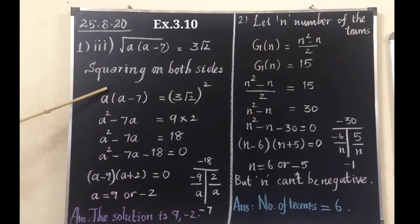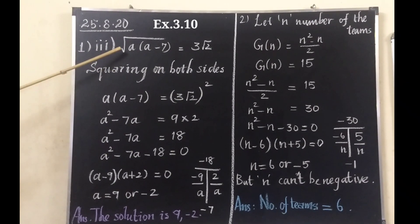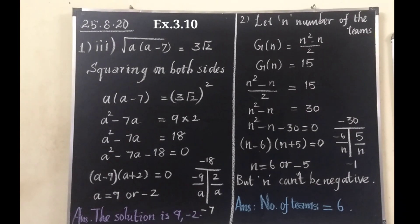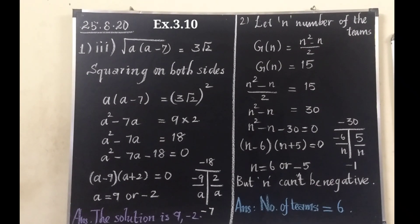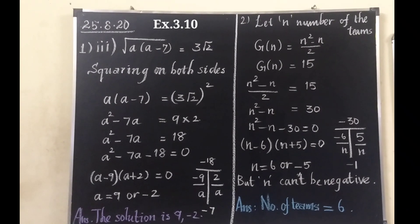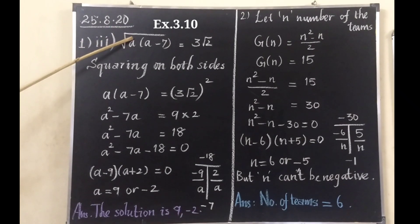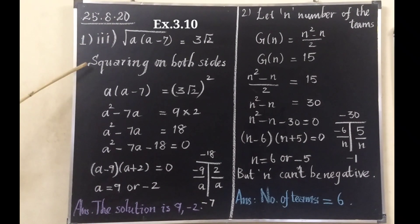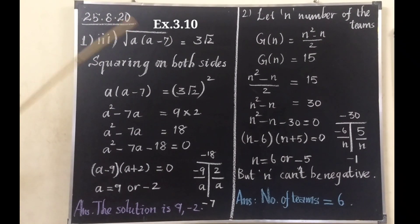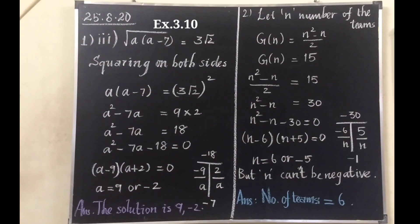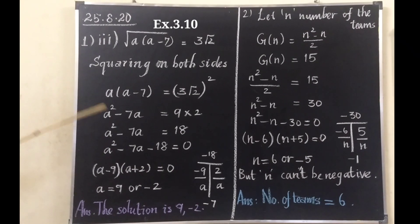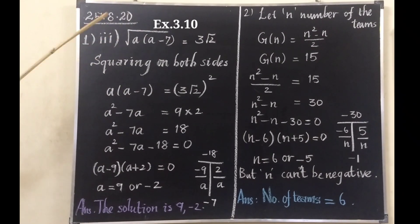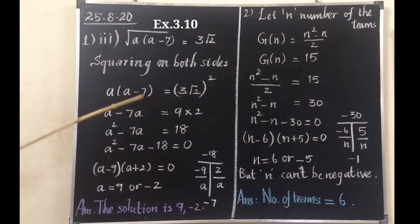Why are we squaring on both sides? To remove the square root. If a square is given, to remove the square we have to take the square root. If a square root is given, to remove the square root we have to square on both sides. If any change is done on one side of an equation, that should be done on both sides. So we have to square on both sides.